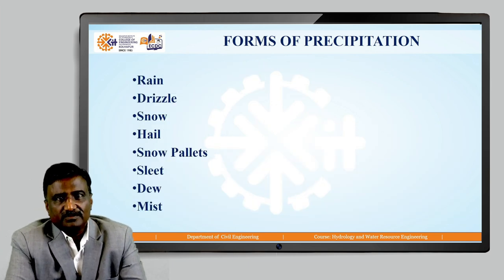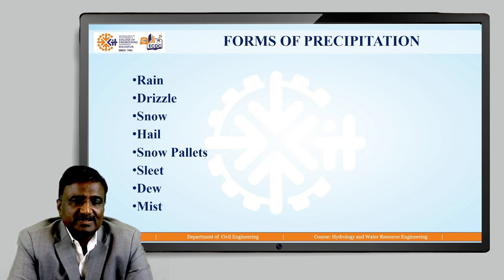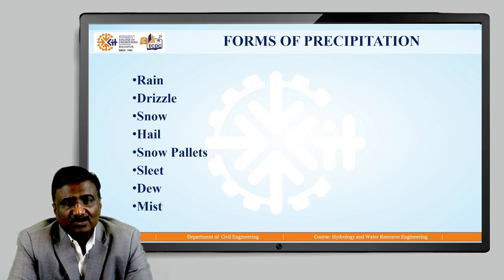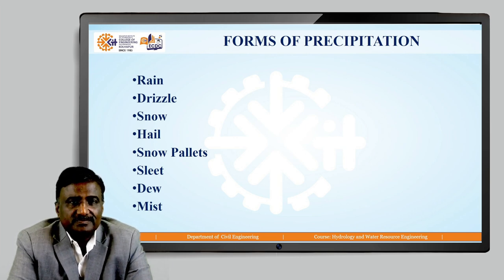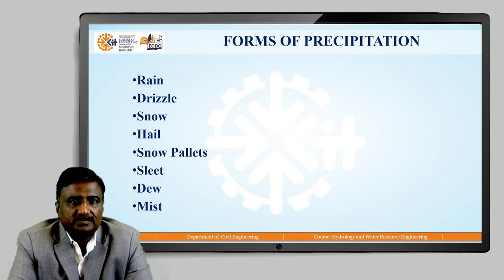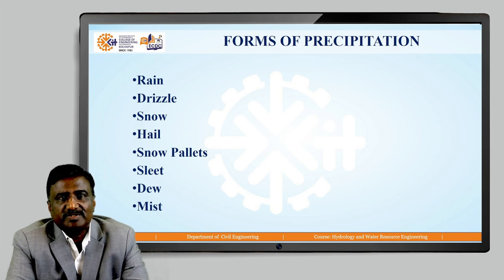Next we will see forms of precipitation. We have already discussed what is precipitation and types of precipitation. Now let us see forms of precipitation. The following are the different forms of precipitation: rain, drizzle, snow, hail, snow pellets, sleet, dew, mist, etc. These are all the various forms of precipitation.